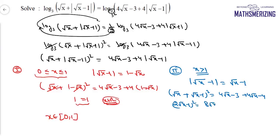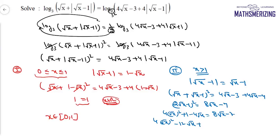Expanding: 4x + 1 − 4√x = 8√x − 7. Rearranging: 4x − 12√x + 8 = 0. Dividing by 4: x − 3√x + 2 = 0, which is a quadratic equation in √x.